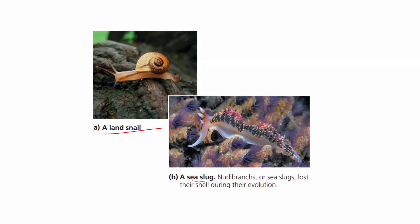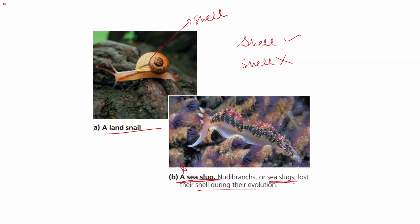Examples of gastropods include land snails and sea slugs (nudibranchs). This group consists of animals that have a shell, like snails, as well as animals that have lost the shell during evolution — like sea slugs. So sea slugs belong to phylum Mollusca, class Gastropoda, but lack shells, while land snails have the protective shell.